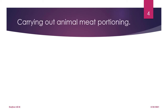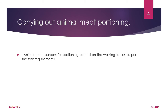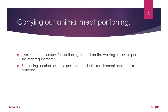Next, we will look into carrying out animal meat portioning. Animal meat carcass for sectioning should be placed on the working tables as per task requirement and what you want to do with it. The sectioning should be carried out as per the product requirements and market demand — again, everything should be done according to the workplace procedure.